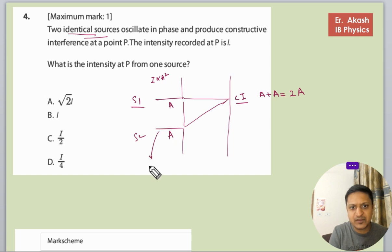The intensity will be directly proportional to A squared. So let's suppose that this is I initial. We can say I initial equals A squared. And I final, after constructive interference, it will become 2A whole squared, so it will become 4A squared. So A squared equals I initial, so I final will become 4I initial.